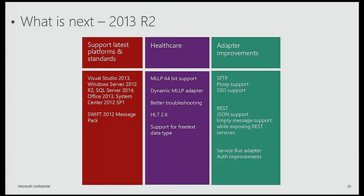The third major R2 theme is adapter improvements. Based on customer feedback since 2013: JSON support will be natively added for REST, SFTP will get proxy and SSO support, Service Bus adapter improvements include additional authentication modes and Service Bus on Windows Server support. The ESB Toolkit issues were already addressed in CU2. JSON support is the major feature — either directly in BizTalk or via Service Bus on Windows Server enabling AMQP support. These are the kinds of improvements you can expect from a minor release.